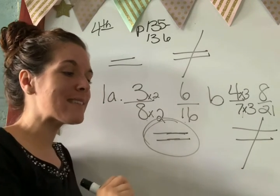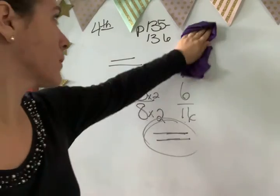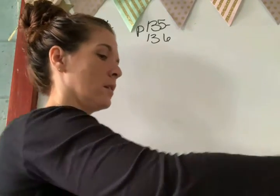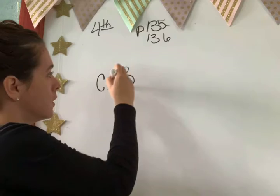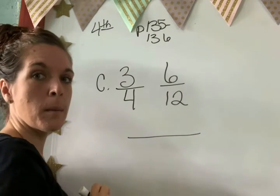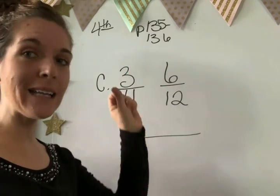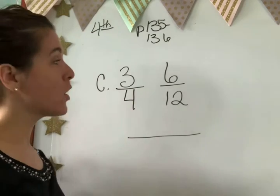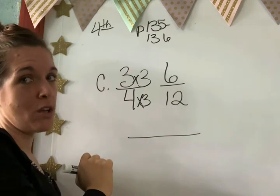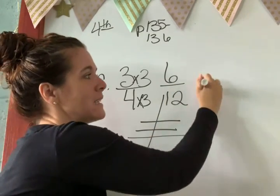Okay? So go ahead and try letter C. You decide are they equivalent or not equivalent fractions. Then we'll check it together. Okay, raise your hand if you got that they are equivalent. Who put an equal sign there? Raise your hand. Who put not equal? Raise your hand. Well, let's see. Okay, Keanu, 4 times what equals 12? 3. And 3 times 3 equals 6? Yes or no? No. So these are not equivalent.